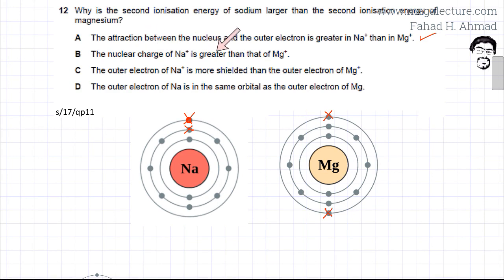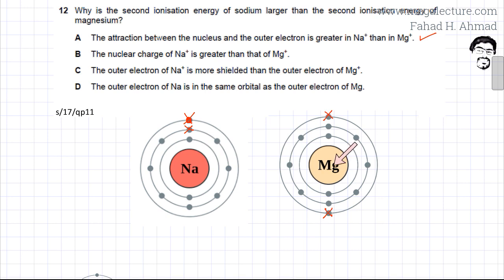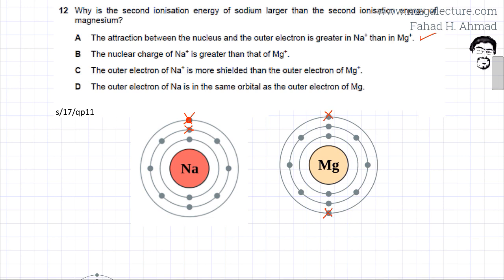Option B states that the nuclear charge of Na⁺ is greater than Mg⁺, which is not true. Sodium has 11 protons whereas magnesium has 12, so the nuclear attraction of Mg is actually greater. However, since the electron is further from the nucleus in Mg, it's easier to remove. So option B is incorrect.